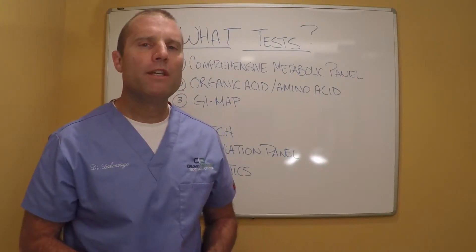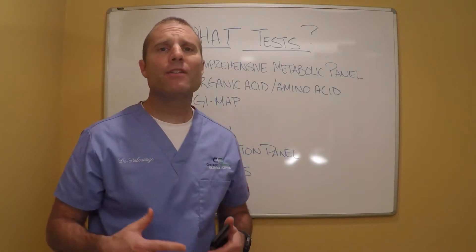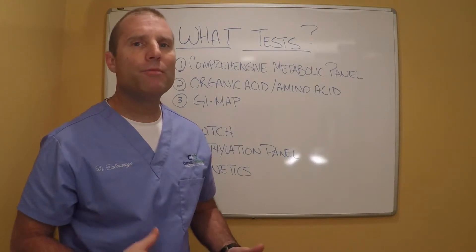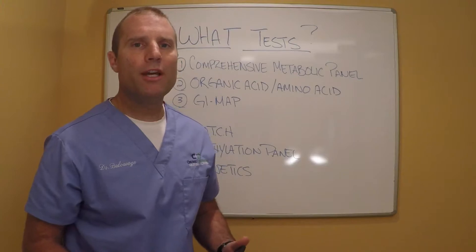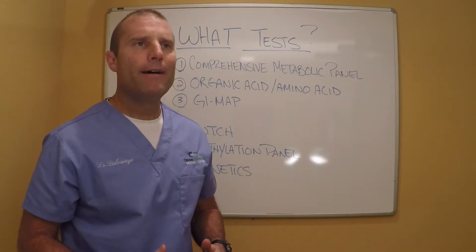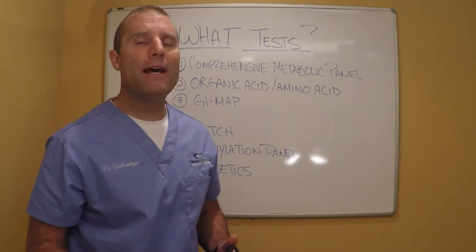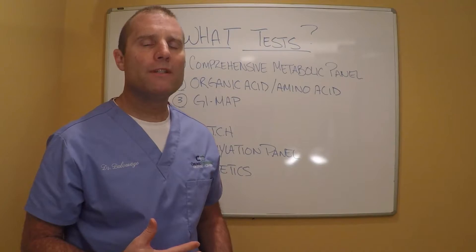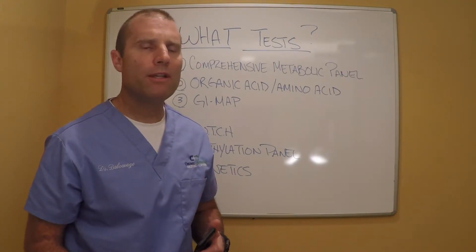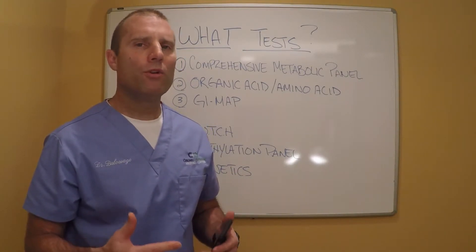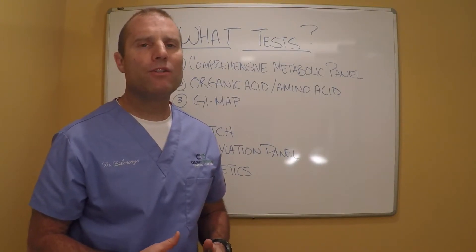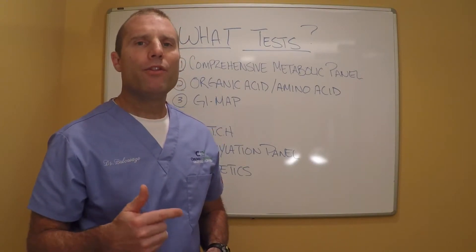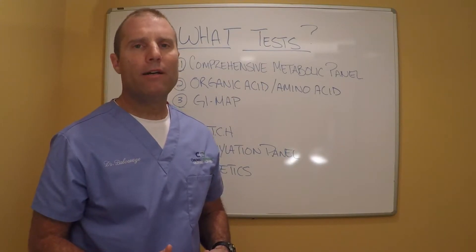My second go-to test, because it gives you so much information, is an organic acid amino acid panel. I think this is a foundational test in functional medicine. It gives us insight into what's going on from a gut health standpoint — is there dysbiosis, yeast or bacterial dysbiosis in the GI tract? Is there malabsorption? We can get information regarding carbohydrate and fat metabolism and how well the Krebs cycle is functioning. We can get a look at neurotransmitter physiology, micronutrient status, detoxification processes, and urea cycle function. If your patient hasn't had one done, I recommend you get one done.